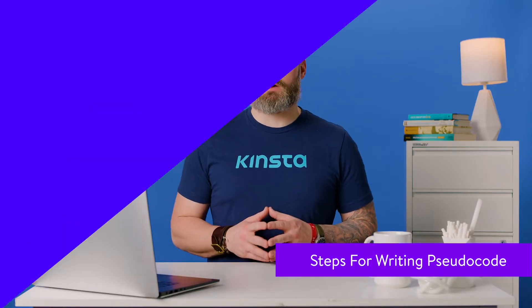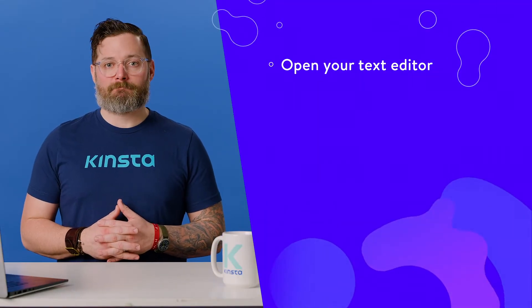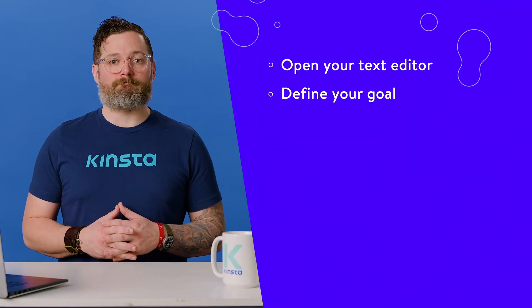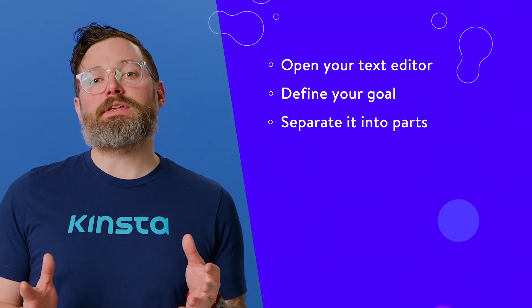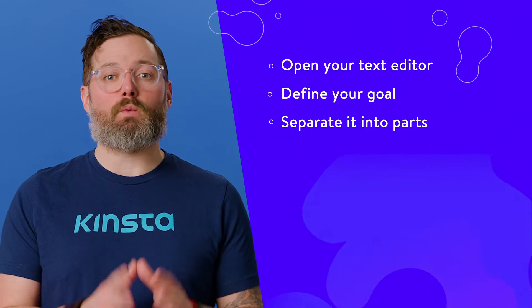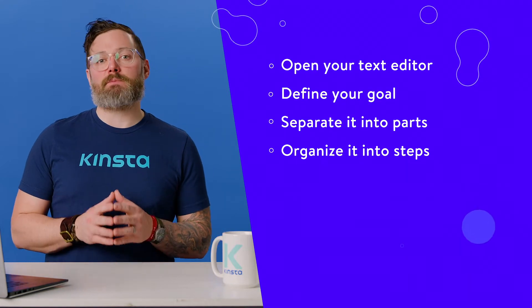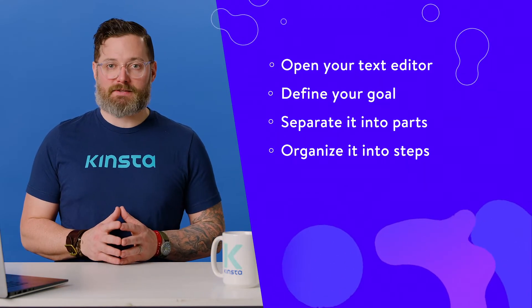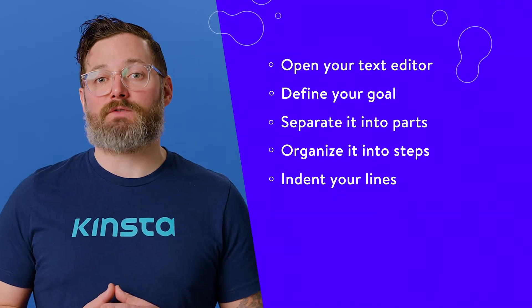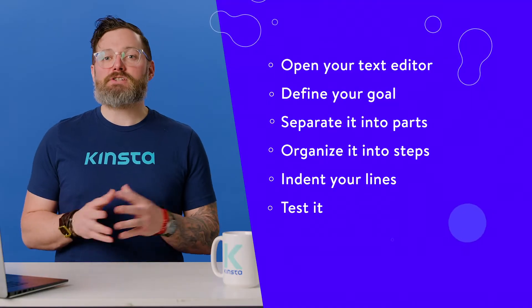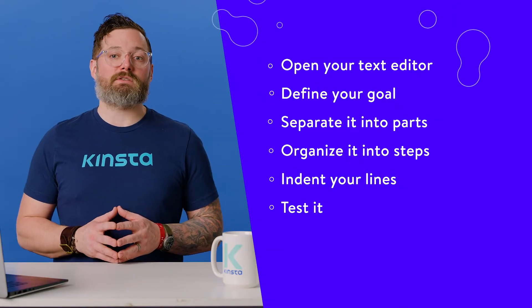Here are some general steps you can follow to write good pseudocode. Open your text editor — pseudocode is most often written in a text or HTML editor, so pick your favorite and open a new file. Define your goal: determine the purpose of your program or function and what you want it to do. Separate it into parts: break down the problem into smaller, more manageable chunks. Organize it into steps: write out the steps of your program in logical order, using natural language and avoiding specific programming constructs or methods such as control structures or typecasting. Indent your lines: use indentation to show the structure of your program — for example, you might indent the lines of code that belong inside a loop. Test it: walk through it verbally or have someone else read it and report back what they think the pseudocode is supposed to do.